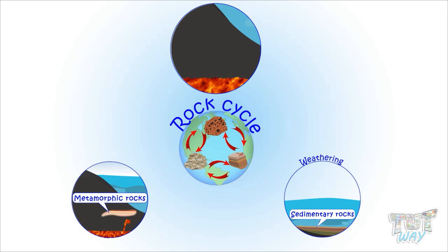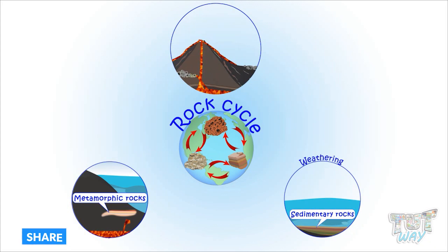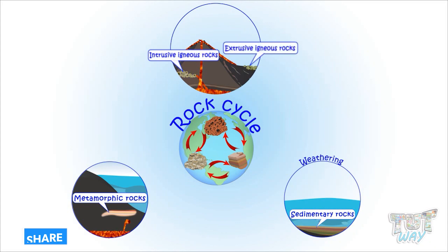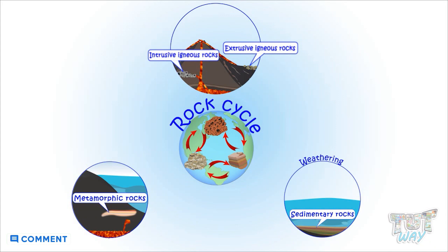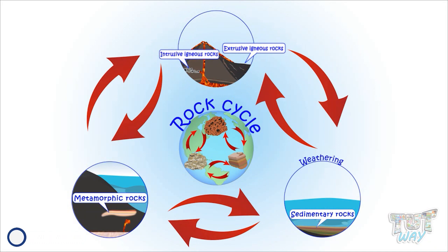We know that magma changes to two types of igneous rocks: intrusive igneous rocks and extrusive igneous rocks. And there is continuous transformation from one type of rock to another type of rock. This is called the rock cycle.